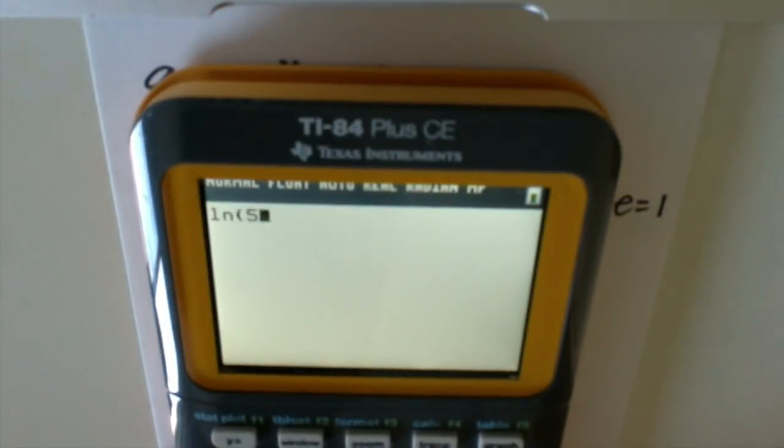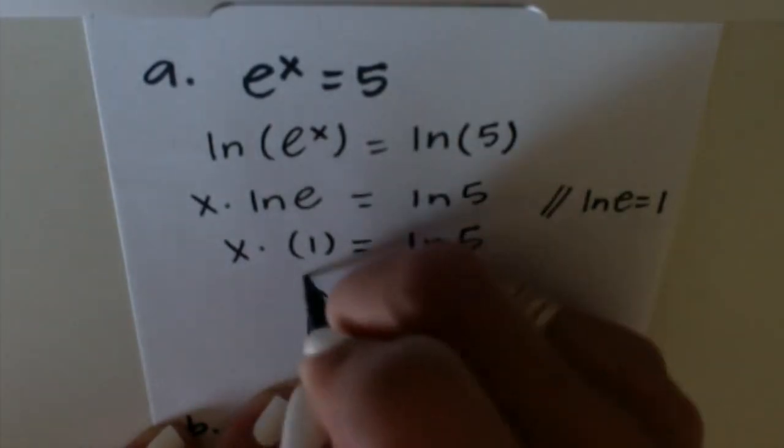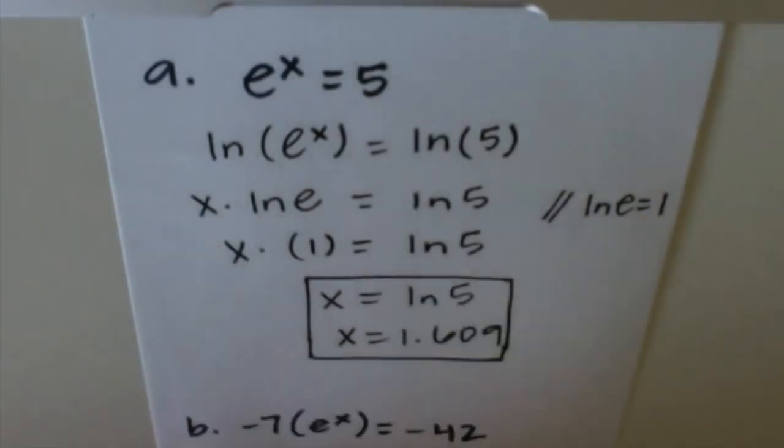We're going to go ln(5), and you get 1.609. So you can list your answer as either ln(5) or the decimal value 1.609.